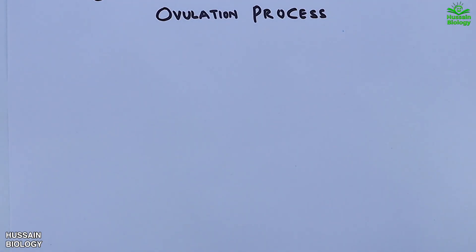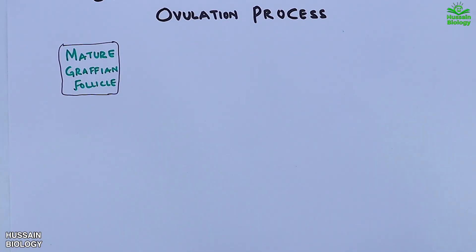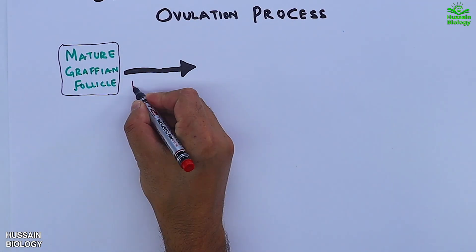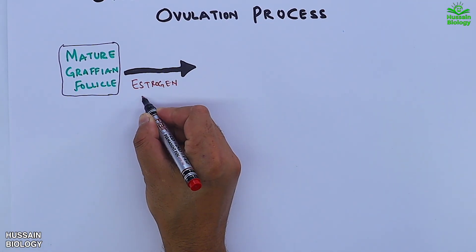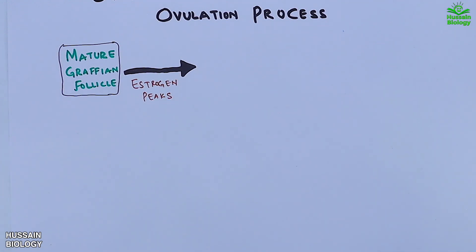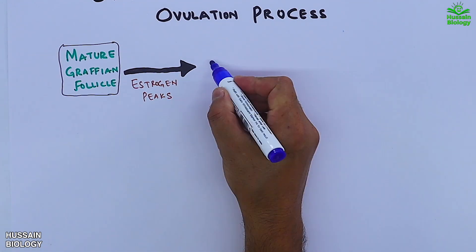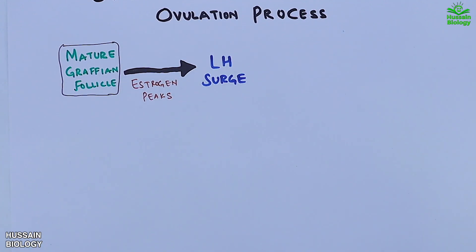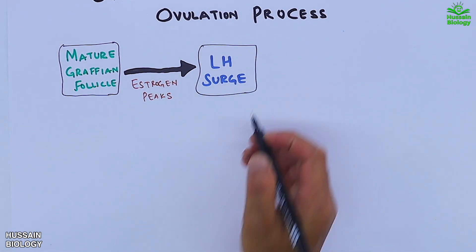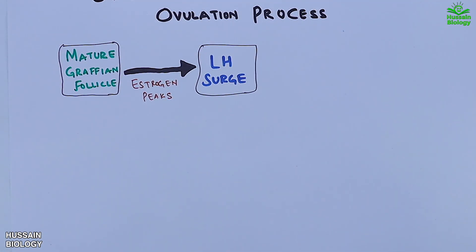When we look at the ovulation process in detail, first we have the mature Graafian follicle, which is followed by an increase in estrogen levels. This estrogen provides the ovulatory stimulus, and then we get the LH surge where LH peaks. This period commences after 14 to 24 hours of the estrogen peak.